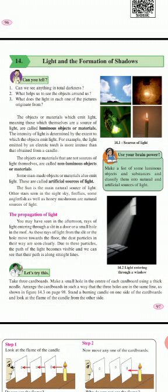Here we have four pictures showing sources of light. The objects and materials which emit light — those which are themselves a source of light — are called luminous objects and materials. These are objects which can produce and emit light, and we call them luminous.